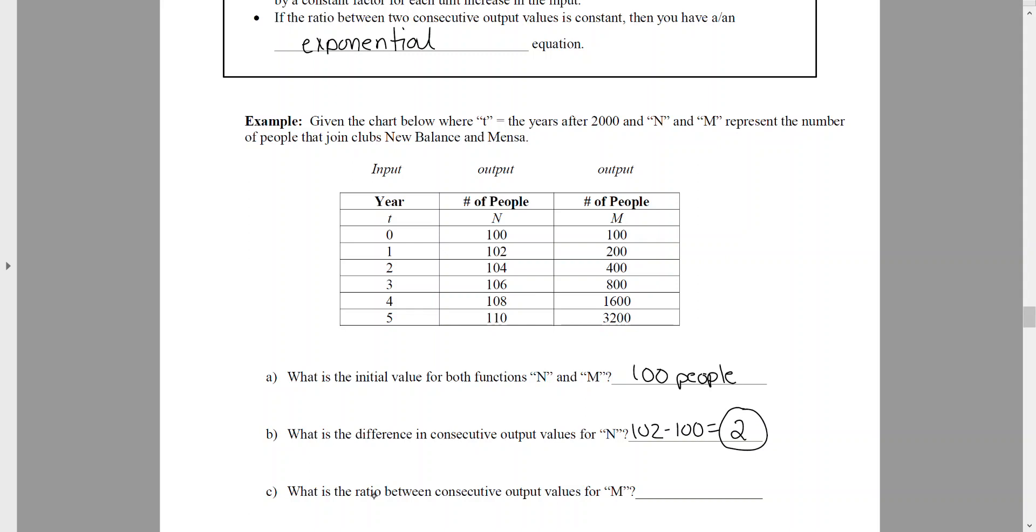The ratio, now that implies division between consecutive output values for M. So I go to my M column and I do the same thing. I look at consecutive numbers. The year 2001 versus the year 2000, for example. So if I take 200 divided by 100, that's going to give me a ratio of 2 to 1 or 2.